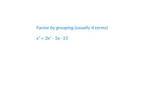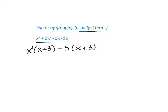Factor by grouping is usually done with four terms. Group two together that have something in common and the other two that have something in common. I'll group the first two because they both have an x² — factoring that out leaves x and 3. For the last two, they both have 5s and are both negative, so take out negative 5, leaving x and positive 3. Now both groups have (x + 3), so take that out as the GCF. That gives you (x + 3)(x² − 5).